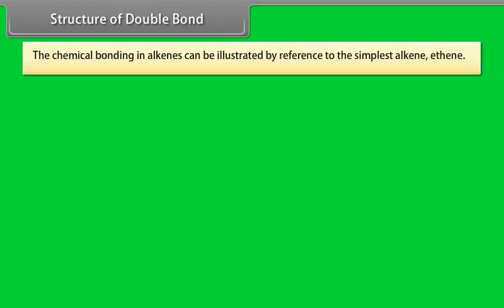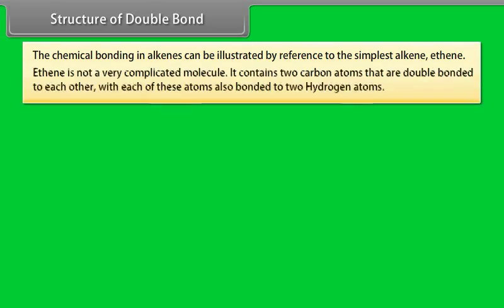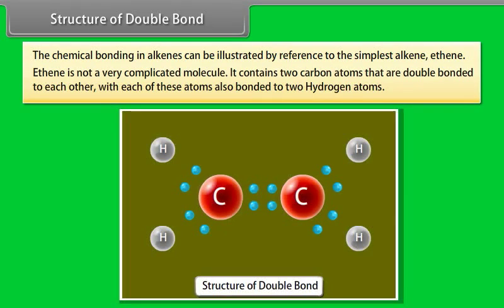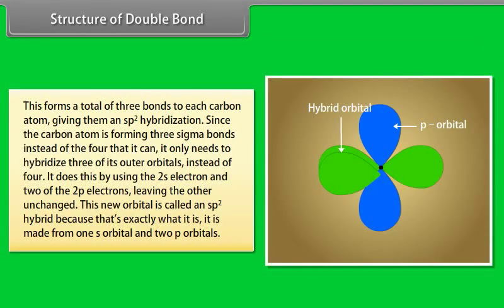Structure of double bond. The chemical bonding in alkenes can be illustrated by reference to the simplest alkene, ethene. Ethene is not a very complicated molecule. It contains two carbon atoms that are double bonded to each other, with each of these atoms also bonded to two hydrogen atoms. This forms a total of three bonds to each carbon atom, giving them an sp2 hybridization.